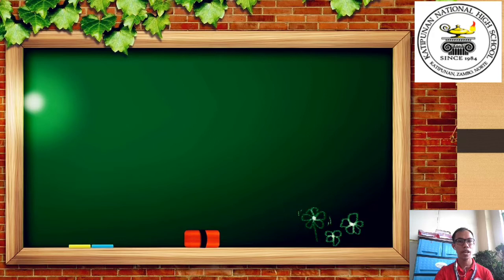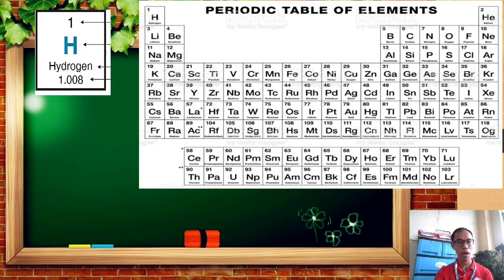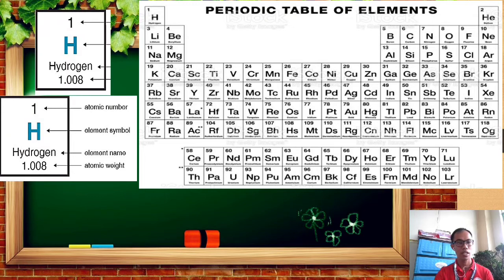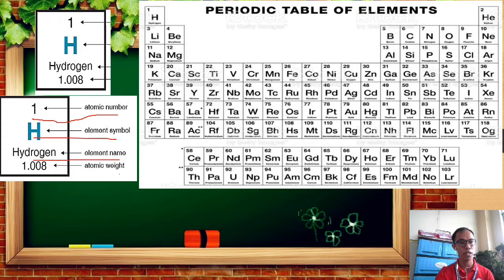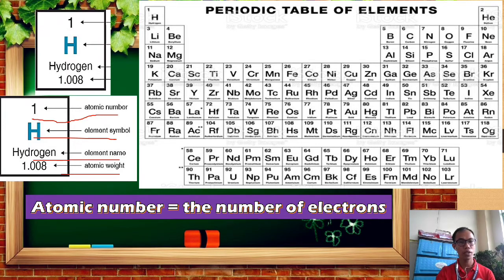By this time, let us identify how many electrons are in an atom. Let us direct our focus on the periodic table of elements. Each element is written inside a box containing its atomic number, element symbol, name, and atomic weight. The number we use to determine how many electrons to distribute is the atomic number, because atomic number equals the number of electrons.